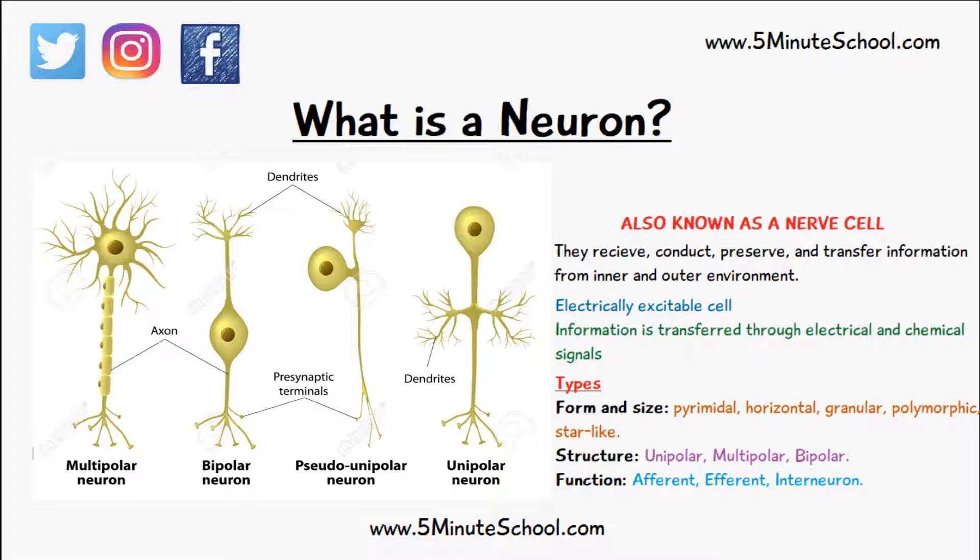Multipolar neurons are usually motor neurons and they have quite a few processes — one axon and several dendrites. Bipolar neurons are spherical in shape, they have one axon and one dendrite, and they're usually located in the eyes and the retina.